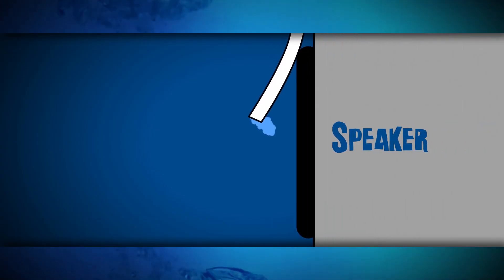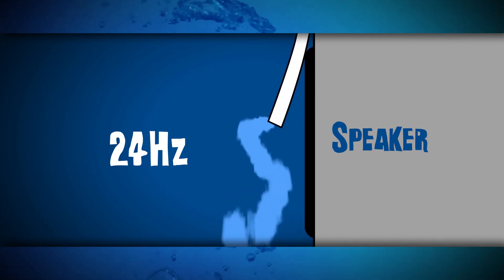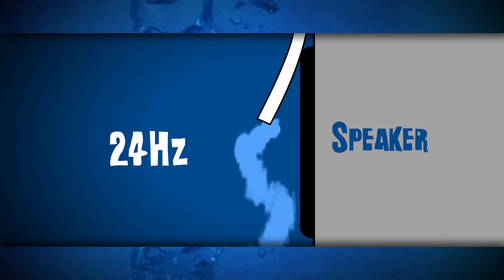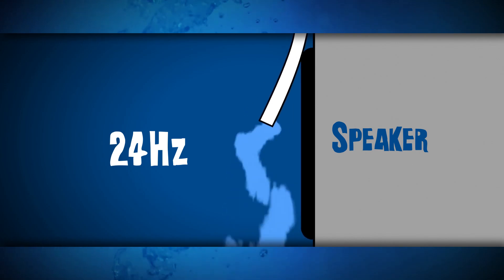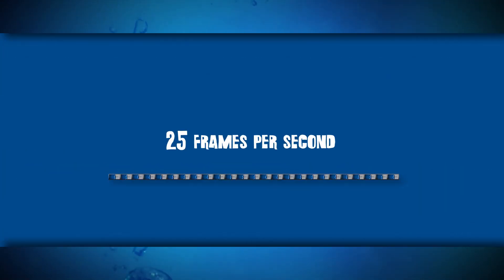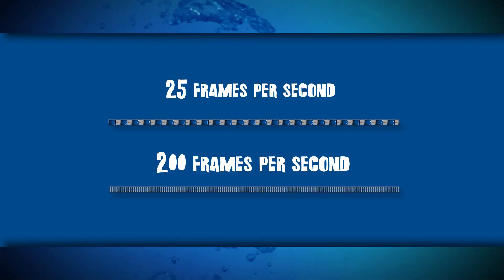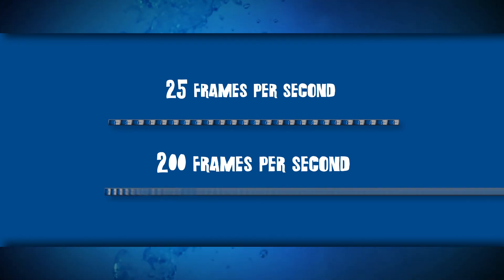The speaker pushes the handset with a certain frequency, 24 hertz. This is 24 vibrations of the speaker membrane per second. A TV video is also 24 or 25 frames per second. Now, to record the video, we used a camera that shoots almost 10 times faster, 200 frames per second.